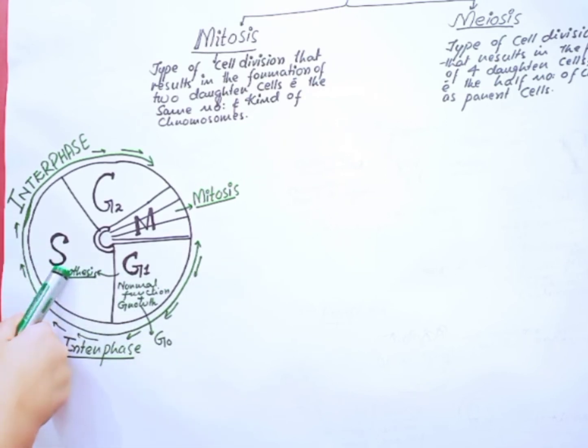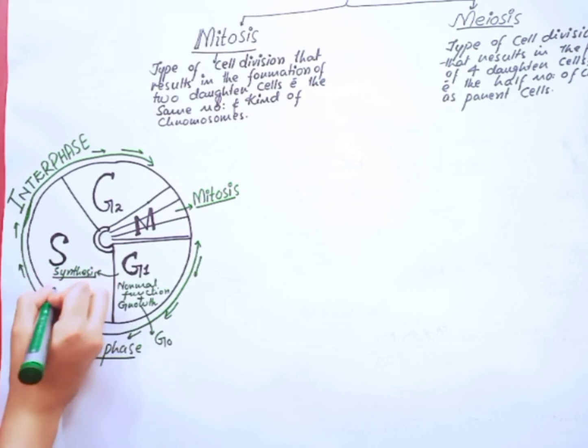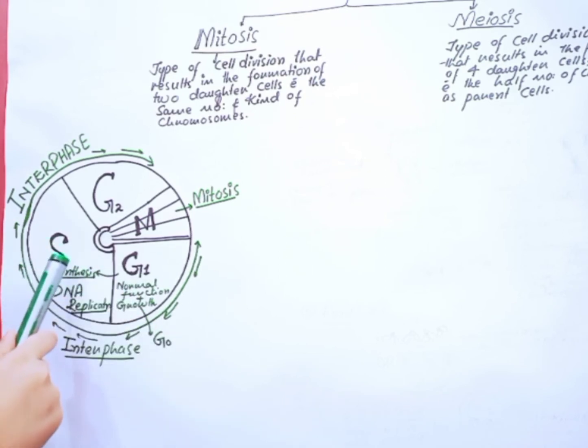The synthesis phase is the very important stage of interphase in which DNA replication occurs. In this phase, the cell replicates its DNA. When cell receives signals for division, then cell duplicates its DNA in synthesis phase.